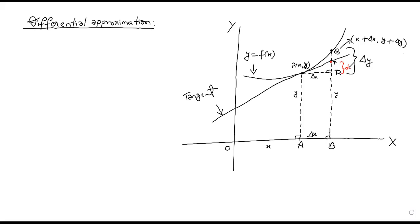TR is the approximate change in y — that is dy — the approximate change in y. Delta y is the actual change in y. The point Q is on the curve, so y = f(x), and delta y is the actual change in y.